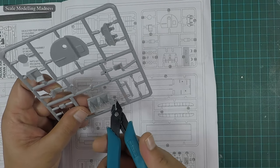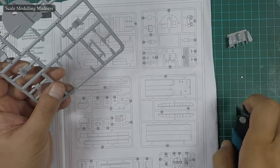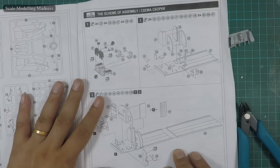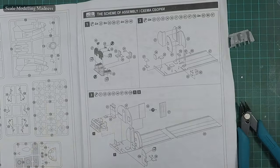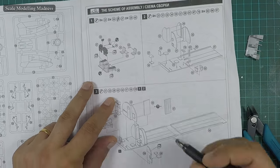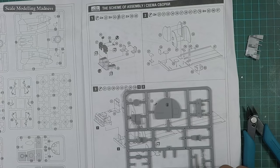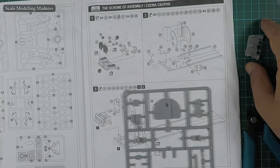I cross off the number from the instructions sheet, so that I know which pieces I have already cut off. And now for the next piece, which is 27.